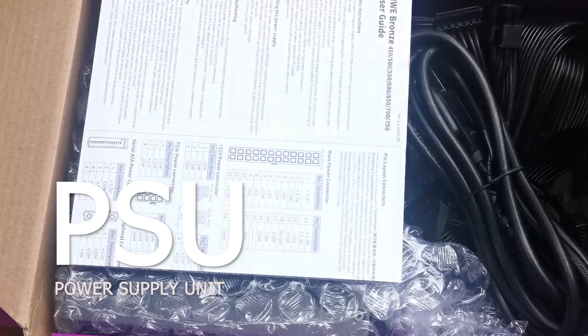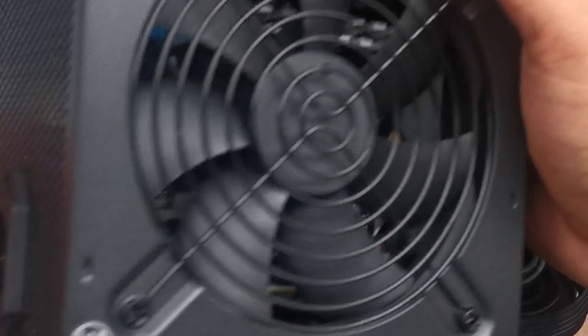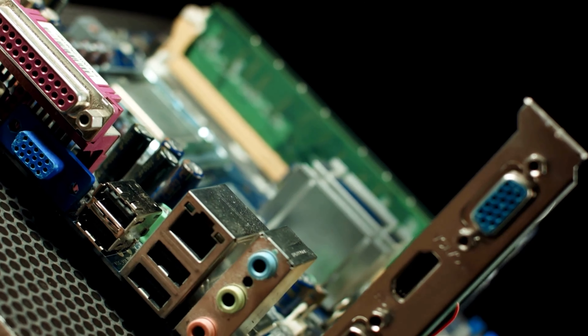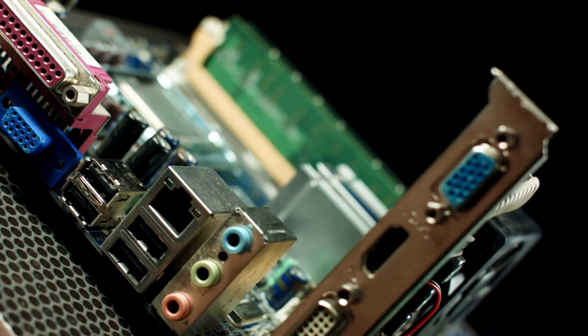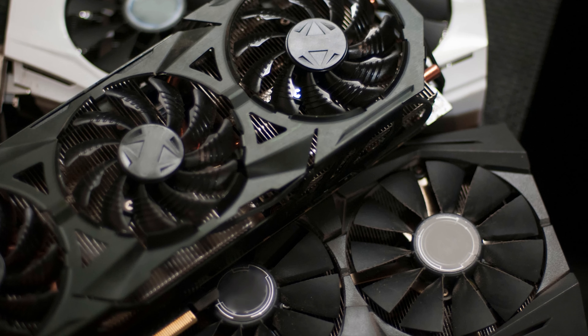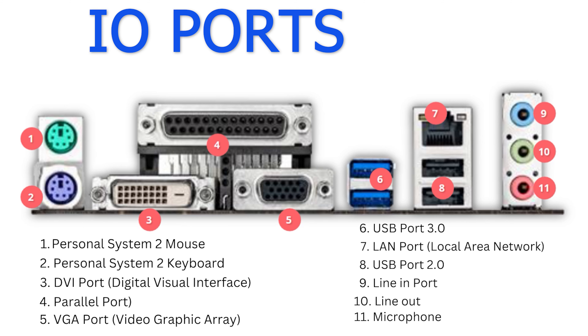The power supply unit converts direct current power that your motherboard, drives, and other peripherals need. A graphics card is an expansion card which generates a feed of output images to a display. Here are some common IO ports of a computer.